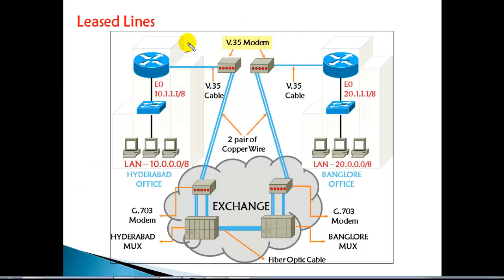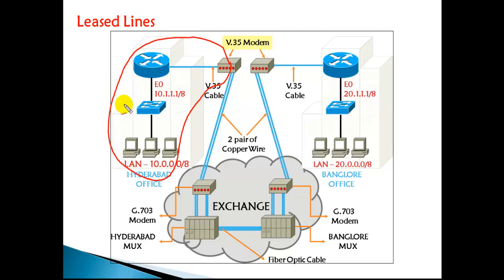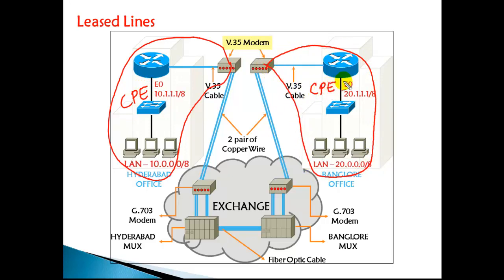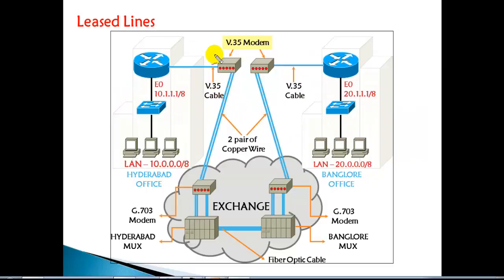This portion is called Customer Premises Equipment (CPE), and the same term applies on both sides. If anything goes wrong up to this point, it is the responsibility of the customer to fix it. Any cable or connectivity issue in the LAN — between computers and switch, or switch to router — is your responsibility. Beyond that, the service provider boundary starts.